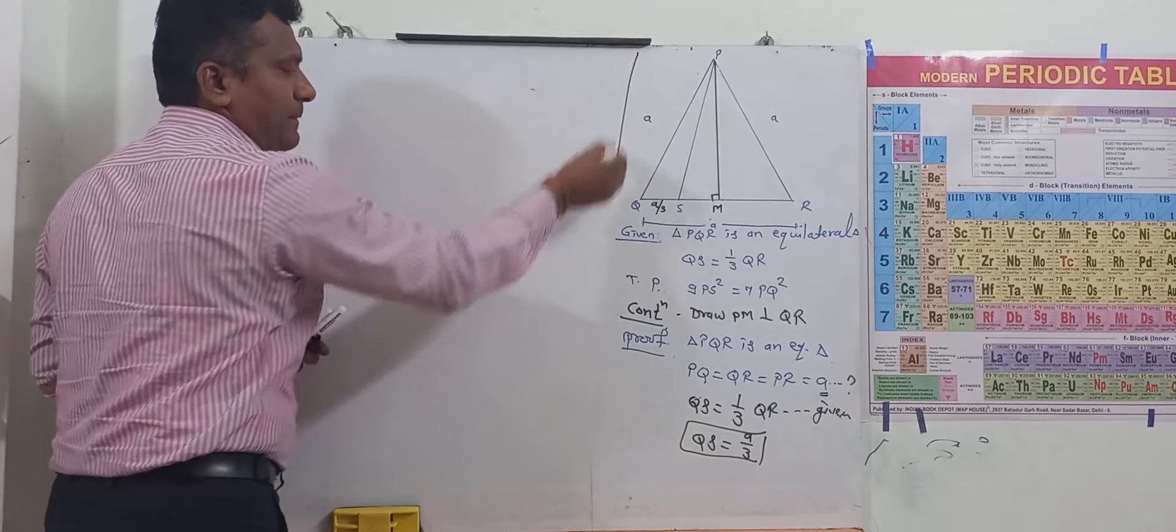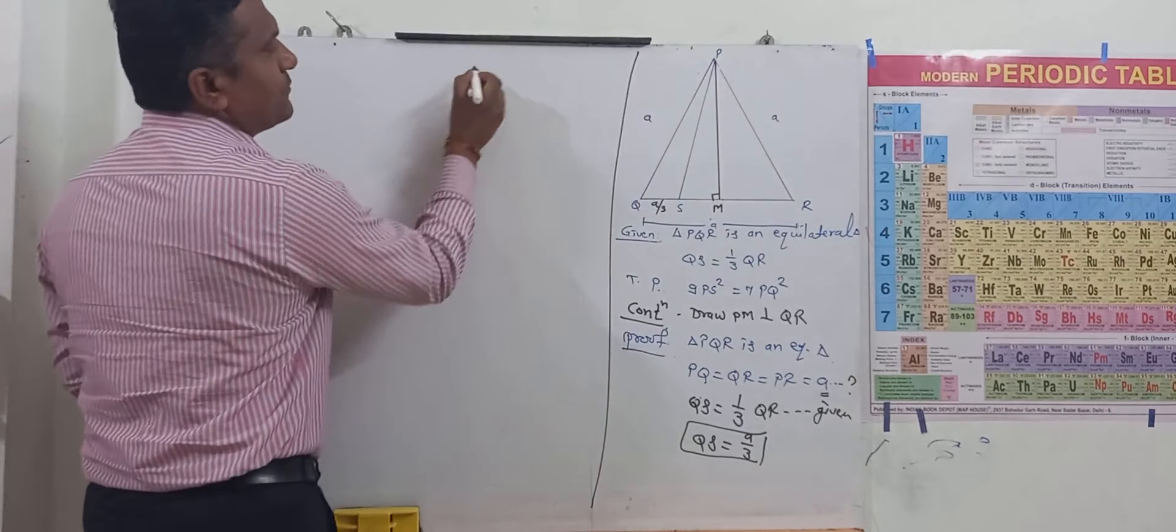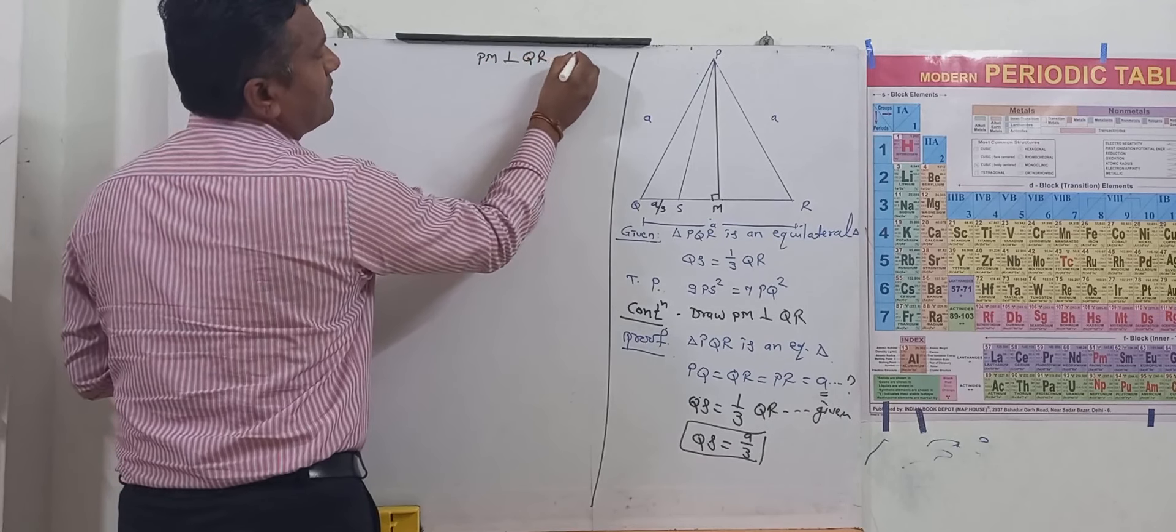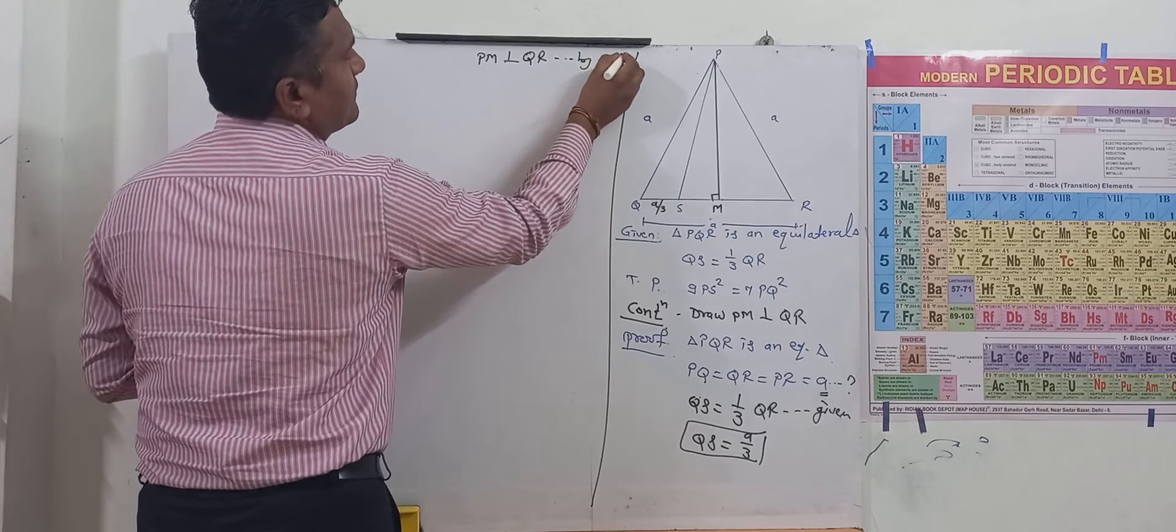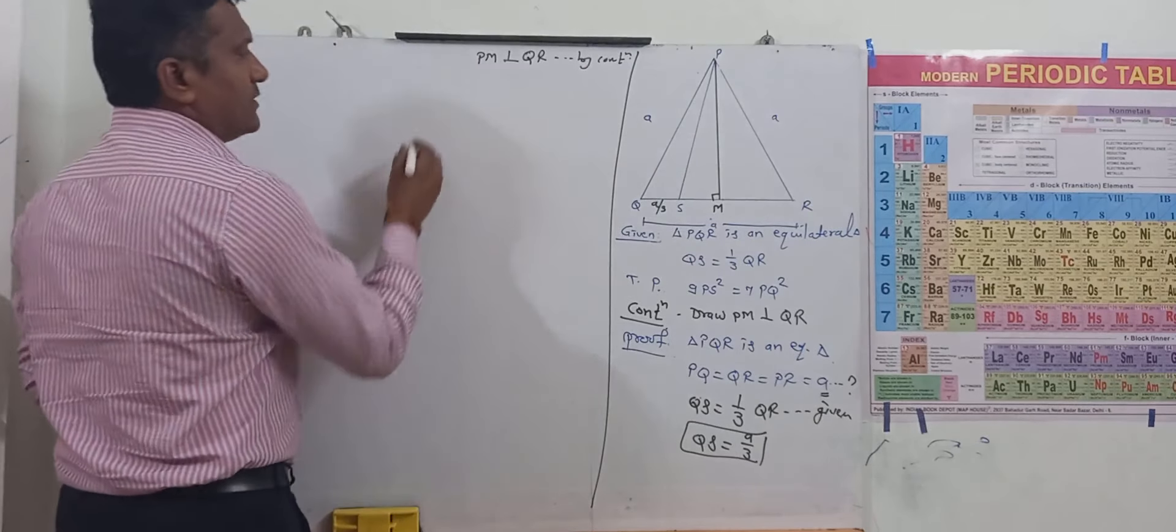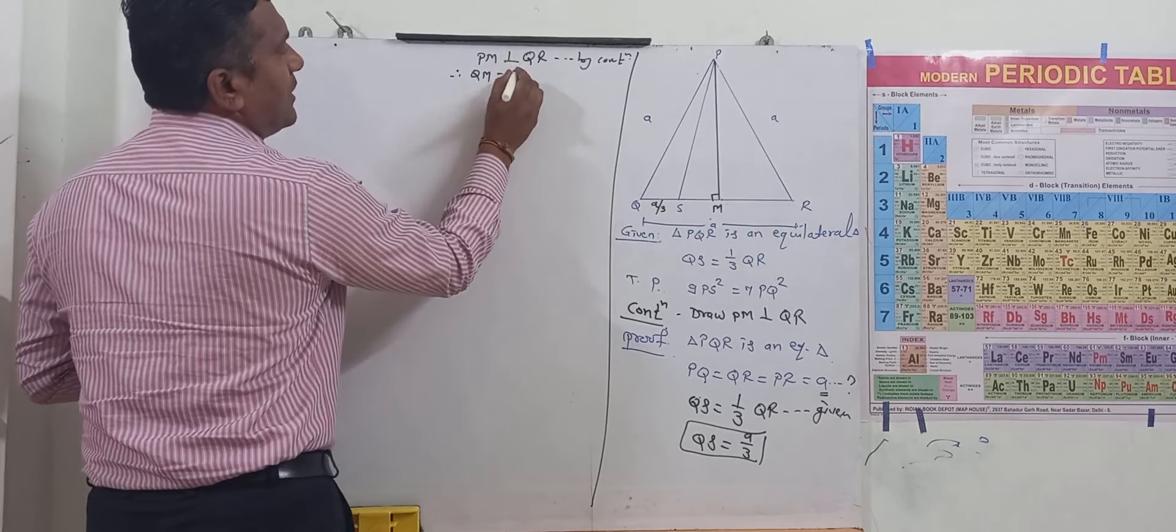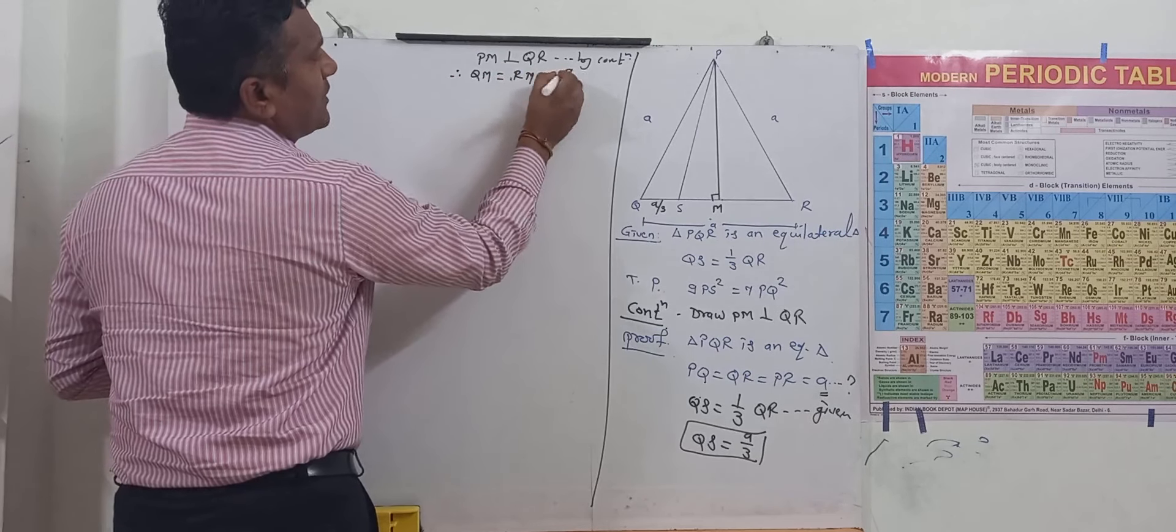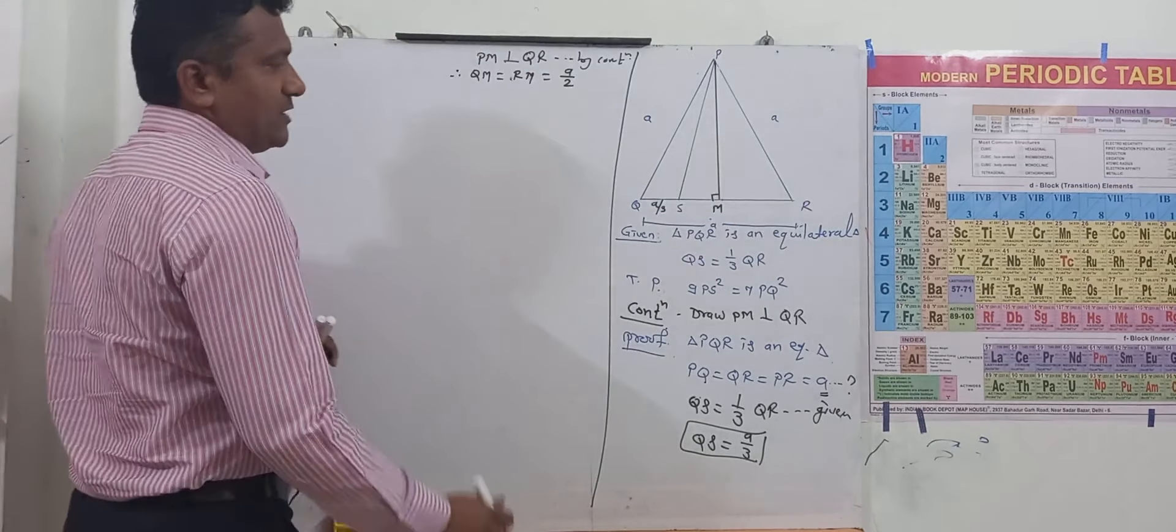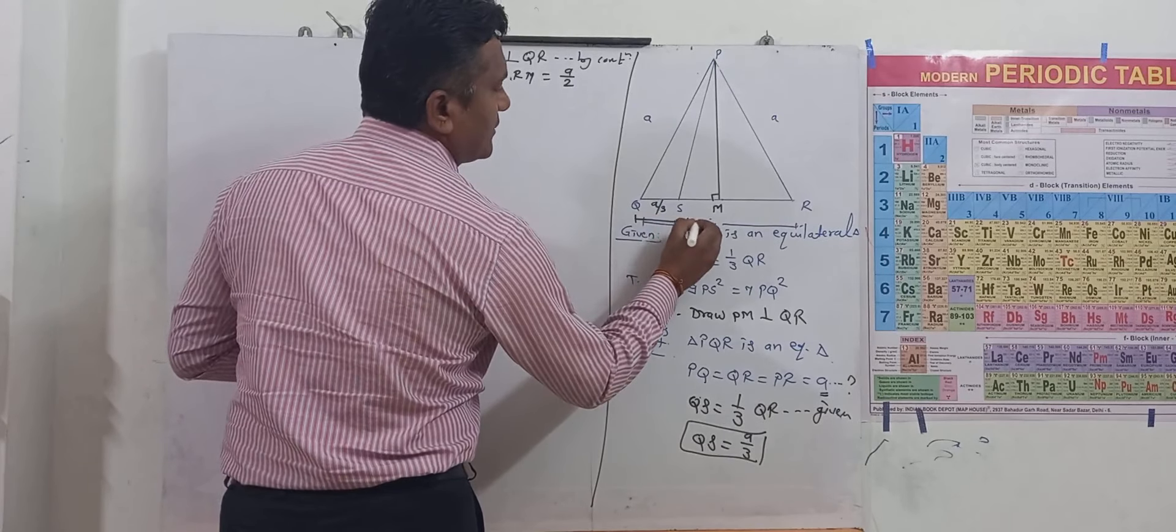Now look at here, this PM is perpendicular to QR by construction. Therefore, it become the perpendicular bisector of QR. Therefore, QM equal to RM equal to A by 2. This total A, QM is equal to A by 2.